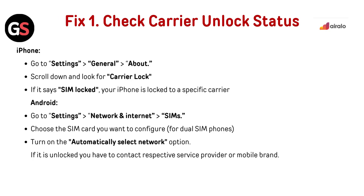Check carrier unlock status. For iPhone, go to Settings, then General, then About. Scroll down and look for Carrier Lock. If it says SIM Locked, your iPhone is locked to a specific carrier.